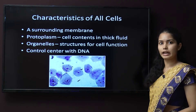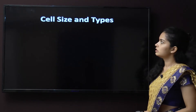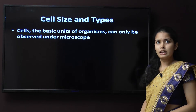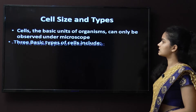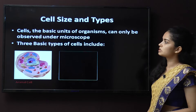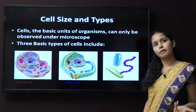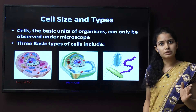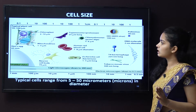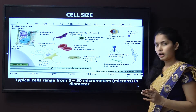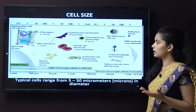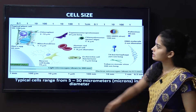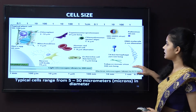This is the staining slide of a cell. Now, cell size and types: cells, the basic units of organisms, can only be observed under a microscope because they are microscopic. There are three basic types of cells — the animal cell, the plant cell, and the bacterial cell.